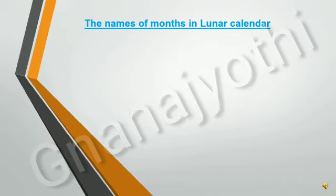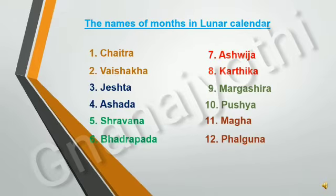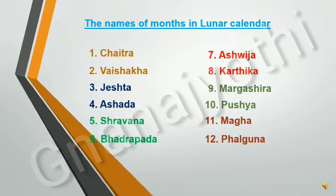Now, let us learn the names of months in the lunar calendar. That is Chaitra, Vaishaka, Jaishta, Ashada, Shavana, Badrapada, Ashwaja, Kartika, Margashira, Pushya, Magha, and Parguna.